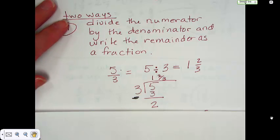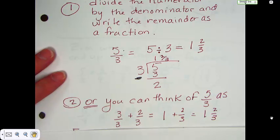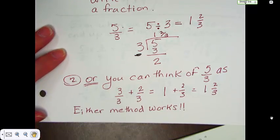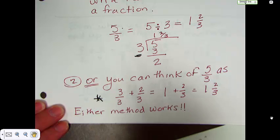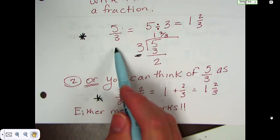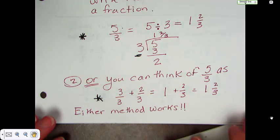Now, the second way to do this, we think of 5 thirds as 3 over 3 plus 2 over 3. And so then because we took 5 minus 3 and we're left with the 2, so we can think of it as 1 plus the 2 thirds or 1 and 2 thirds. Either method works. Some of you may have learned it this way. And that's fine if it always works for you.